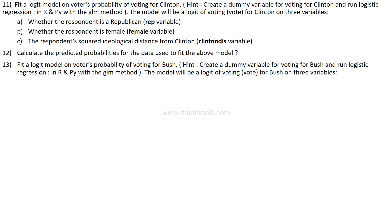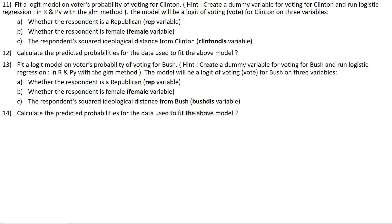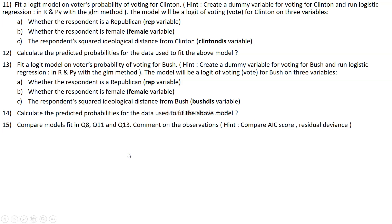After that, fit a logistic model on voters' probability of voting for Bush. Create a dummy variable for voting for Bush and run logistic regression using the glm model. The model is: logit of vote for Bush on three variables — whether the respondent is Republican, whether the respondent is female, and the respondent's squared ideological distance from Bush ('bushdis'). Calculate predicted probabilities for that model, then compare model fit across questions 8, 11, and 13 by examining the AIC score and residual deviance, and write an analytical commentary.